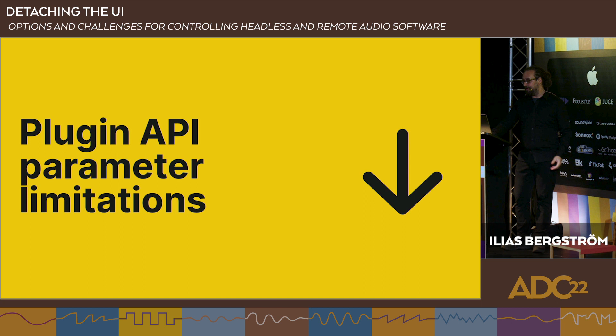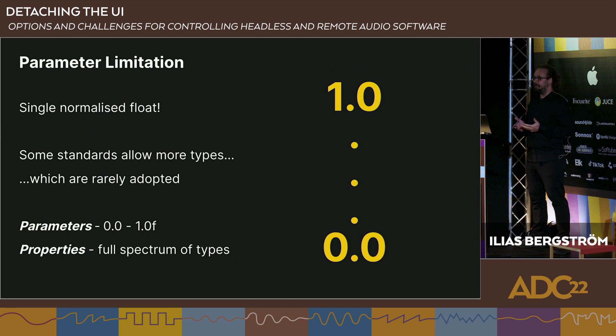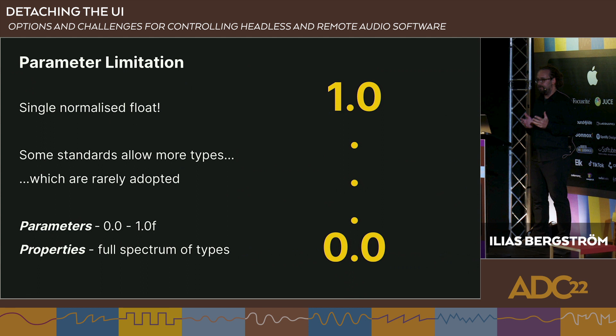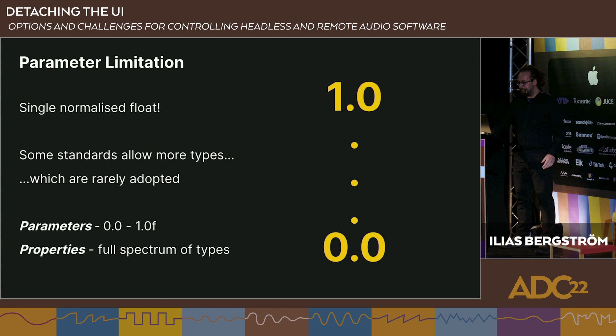I complained about plugin API parameter limitations — why not just use those and go home? Surely nothing new to you: the lowest common denominator of those APIs is still today the single normalized float value. There are plugin APIs which support much more, but there are also many plugins, APIs, and hosts that support only that. We all still have to keep to that to the greatest extent possible, or we become incompatible with some host or controller. There are workarounds, but they're all compromises.